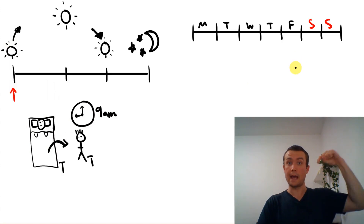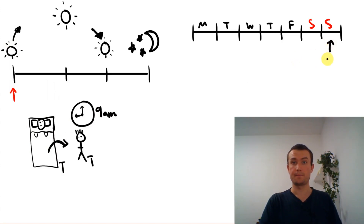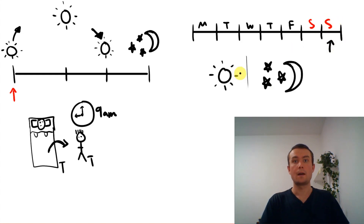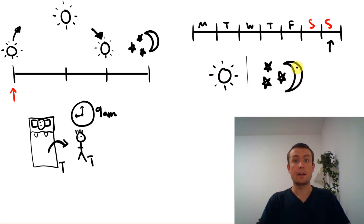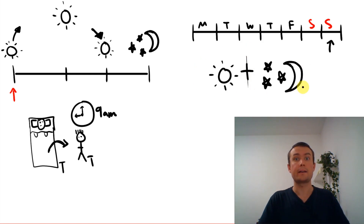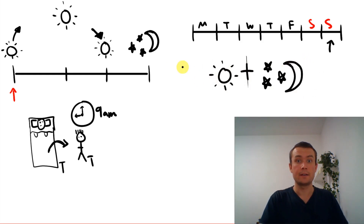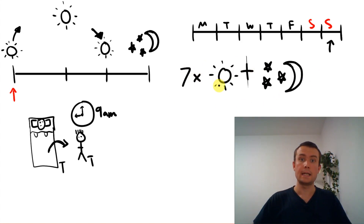Today is Sunday. Day and night together make a day. There are seven days in a week.